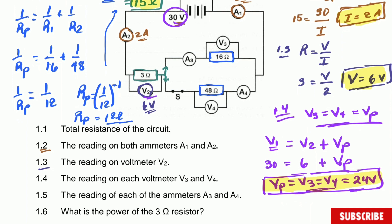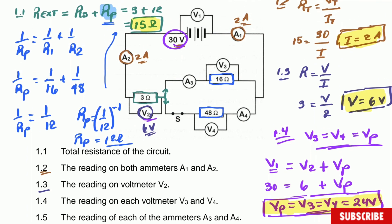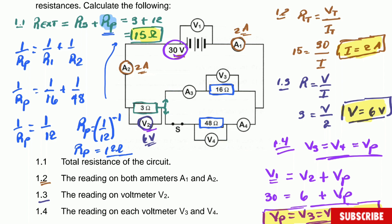Question 1.5: calculate the reading on each ammeter A3 and A4. Be careful — the current splits here into two parts. It splits unevenly because the resistors have different values. The one with less resistance gets more current; the one with higher resistance gets less current. But we have the potential difference, so we can use the same formula for each.